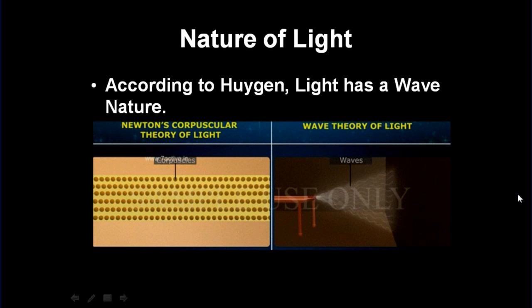Huygens differed in view. He said light has a wave nature. This is a comparison of Newton's corpuscular theory of light. This is how light would travel if it would have been a particulate nature or a wave nature.